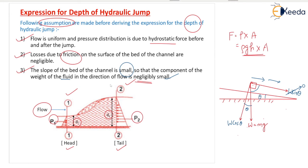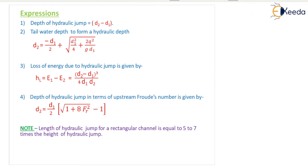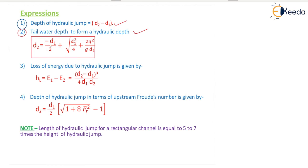Now the expressions for hydraulic jump. First: depth of hydraulic jump equals d2 minus d1, where d2 is depth after the jump and d1 is depth before. Second: to find the tail water depth d2 to form a hydraulic jump: d2 = −d1/2 + √(d1²/4 + 2q²/gd1). Unit is meters. Third: loss of energy due to hydraulic jump is HL = E1 − E2 = (d2 − d1)³ / (4·d1·d2), also in meters.